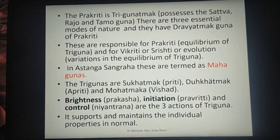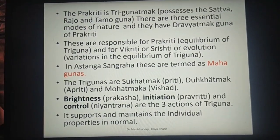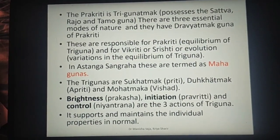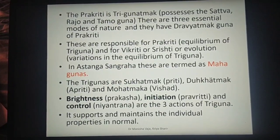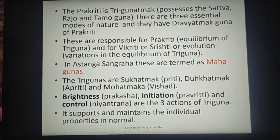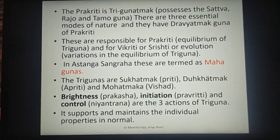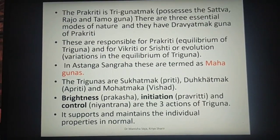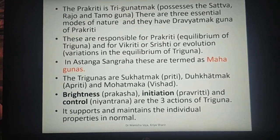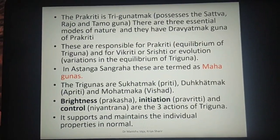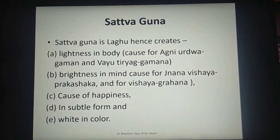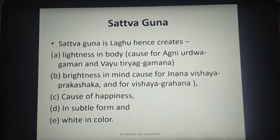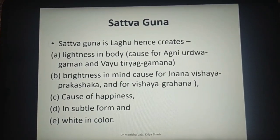Regarding the actions: Brightness or Prakash — meaning to give knowledge or to have knowledge — is the action of Sattva Guna. Initiation or Pravruti is the action of Rajas Guna. Control or Niyantran is the action of Tamas Guna; it supports and maintains individual properties in normal state. The theory of Trigunas has been given by Acharya Charak in Sharir Sthan Adhyaya 4.